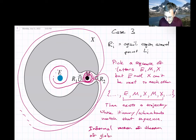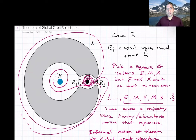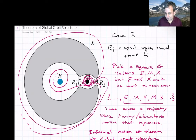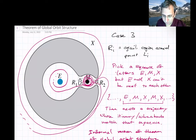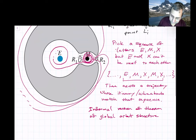It sounds grandiose to call it global orbit structure. In mathematics, global means including something large — not an infinitesimal neighborhood, but something bigger. In this case it can span the entirety of the phase space. The theorem is also constructive in the sense that we can actually find trajectories — we provide a computational way to find them. In fact, that's what led to the theorem: we found things computationally and a group of us went and proved it.